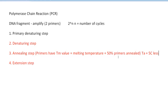Researchers have found that you want your annealing temperature (Ta) to be approximately 5°C less than your lowest Tm value across your two primers. That's why when designing primers you want both Tm values to be very close together — around 60–65°C. People generally say between 55°C and 70°C; 80°C is quite high and I'd avoid it.